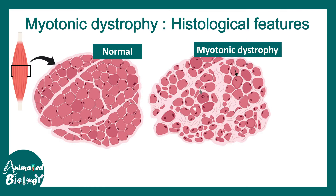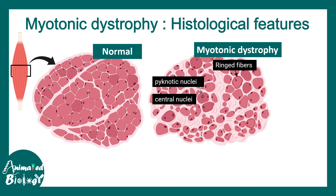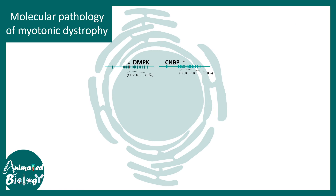Looking at the histology of these muscles, we can appreciate many differences. Looking at the cross section of the muscle, you can see the muscle fibers are pretty much disorganized and disoriented. In the zoomed view, the nuclear positioning is altered — in normal cases the nucleus is always situated in one corner of the muscle cell, but here the nucleus is present in the center in many of these fibers. There could be pyknotic nuclei or nuclear clumps, ring fibers, and irregularity in fiber size and shape.